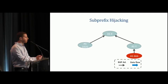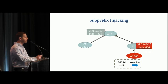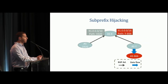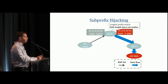To demonstrate sub-prefix hijacks: the legitimate owner still announces its prefix and it reaches ASX. AS666 announces a sub-prefix — a slash 16, a more specific prefix. ASY sends traffic there and relays it to ASX. Now ASX learns a route to the prefix and a route to the sub-prefix. Traffic to the sub-prefix follows the longest prefix match rule, so path length does not matter and traffic will flow to the attacker.